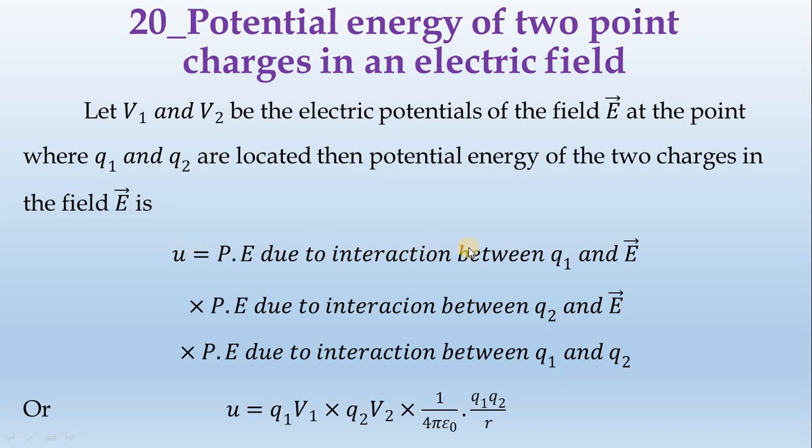Due to the electric field, that is the potential energy of Q1 and Q2. At the same time, Q1 and Q2, there is the interaction. That is how we incorporate it. This is the most important point.